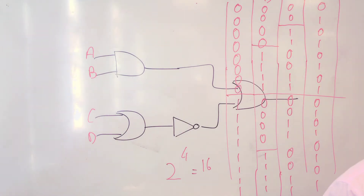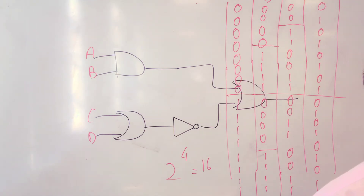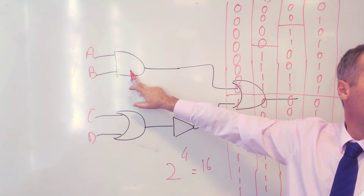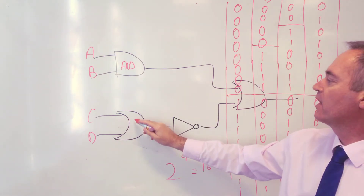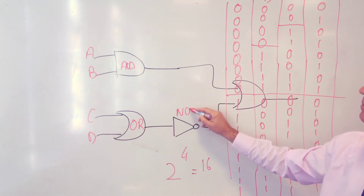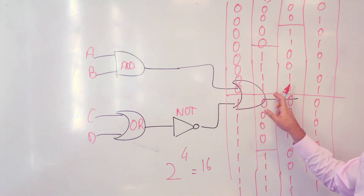All right, so these ones — this is what type of gates? AND gates. And that is an OR gate. This is a NOT gate, and this is an OR gate. So whatever happens here will also happen at the output.